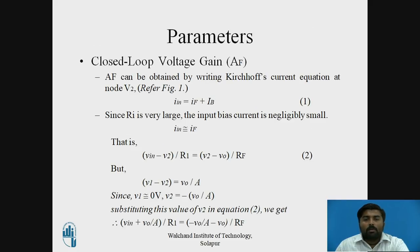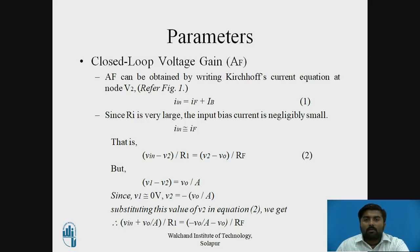Now let's see the parameters of the Voltage Shunt Feedback Amplifier one by one. The first parameter is the Closed Loop Voltage Gain, AF. AF can be calculated by writing Kirchhoff's current equation at node V2 — refer to figure 1. At that node V2, IN equals IF plus IB. IN is the current flowing through R1, IF is the current flowing through RF, and IB is the input bias current flowing into the non-inverting terminal of the op-amp.